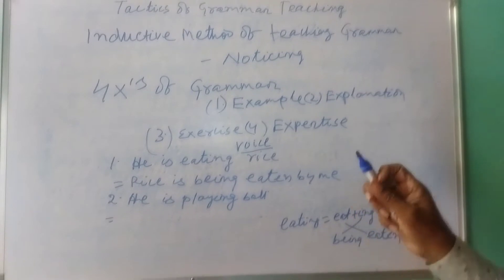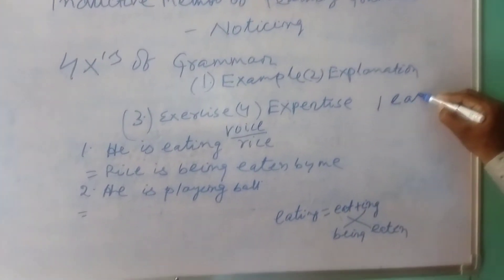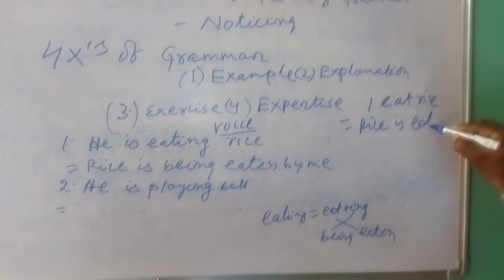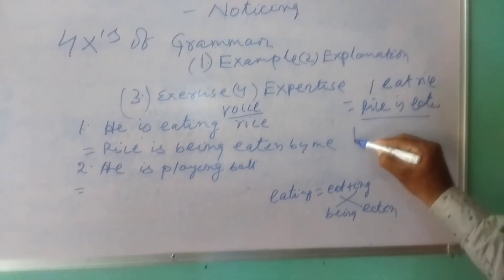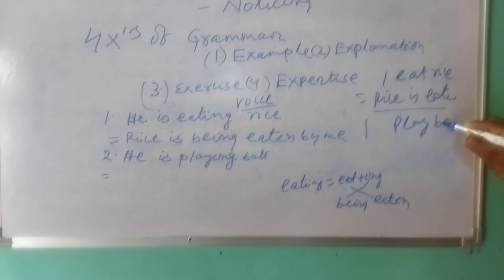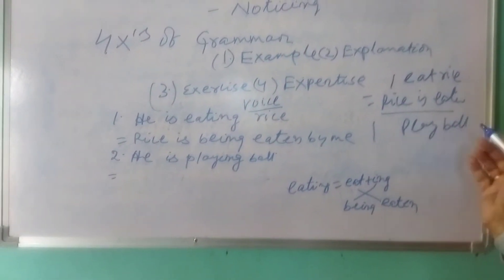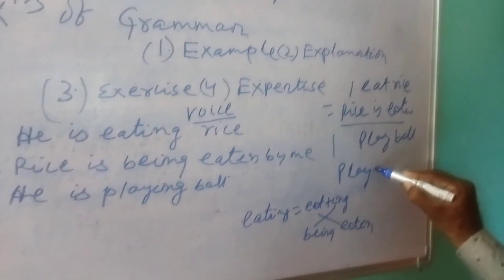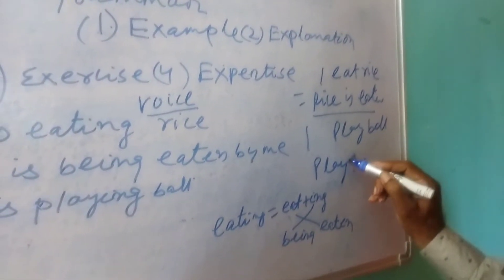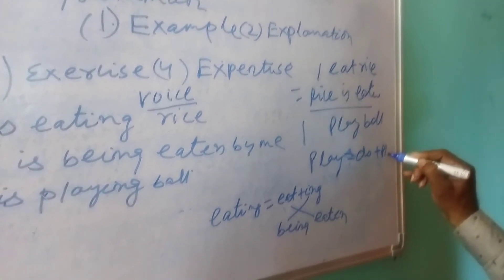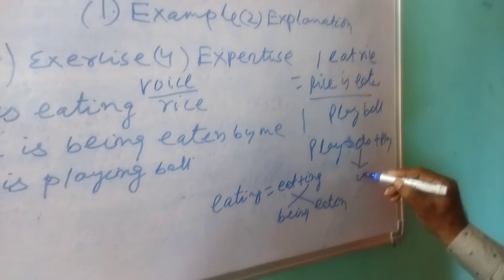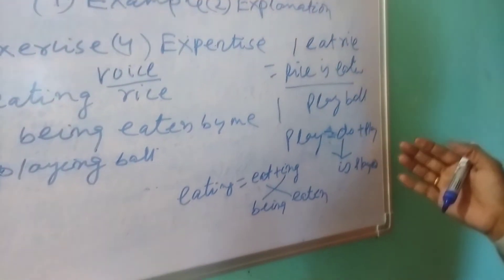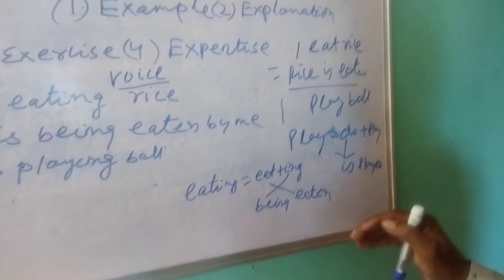Suppose present simple — you write: 'I eat rice,' and simply write the answer: 'Rice is eaten by me.' Write the answer, then write: 'I play ball.' Tell the students to do the answer: 'Ball is played by me.' Then teach them that 'play' equals 'do plus play.' Always remember: for 'do' we write 'is,' and 'play' becomes 'played.' For 'do' and 'does' we use 'is,' and for 'did' that is 'was.'